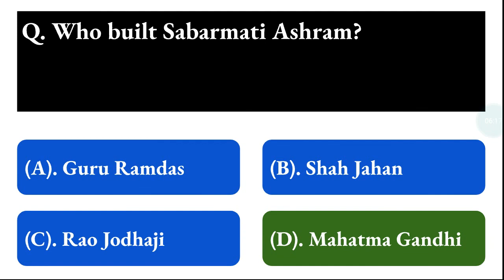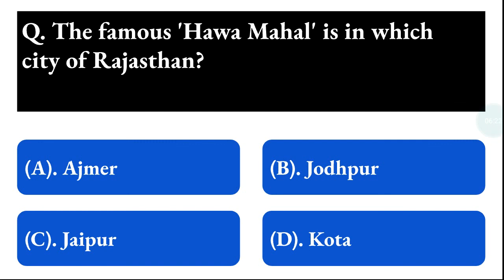Next question: the famous Hawa Mahal is in which city of Rajasthan? Option A: Ajmer, option B: Jodhpur, option C: Jaipur, option D: Gupta. The correct answer is option C, that is Jaipur.